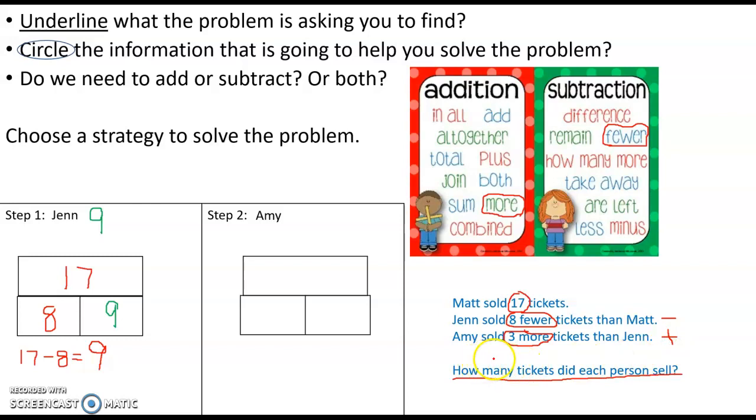Amy sold 3 more tickets than Jen. I know that she sold 3 more than 9 because Jen sold 9. So my problem is 9 plus 3.